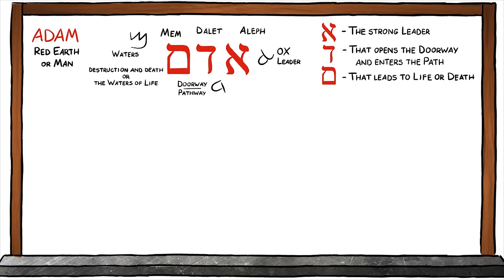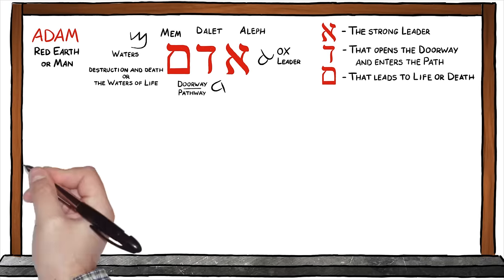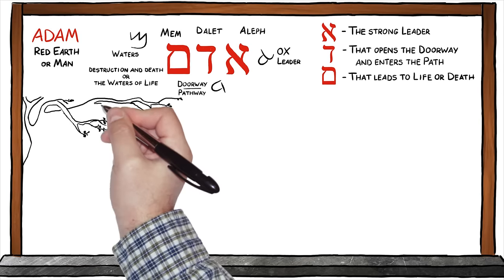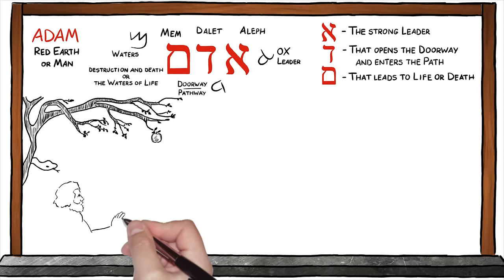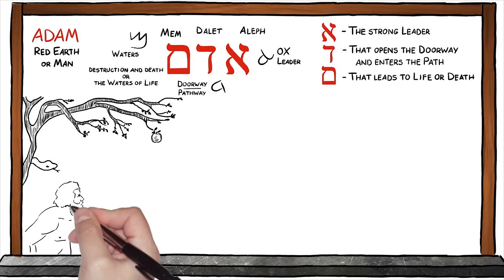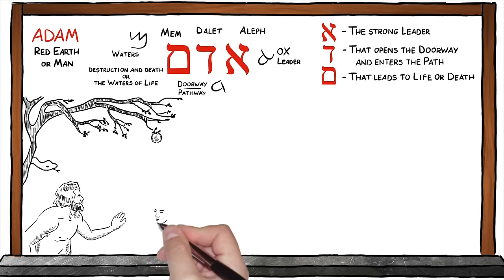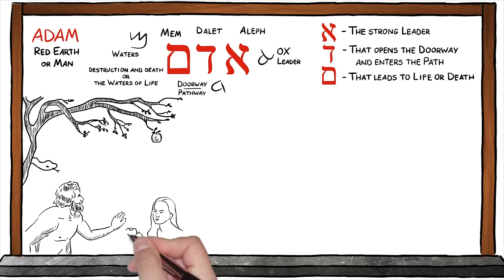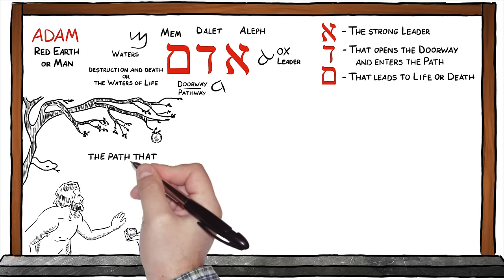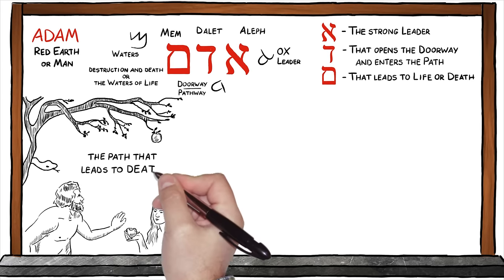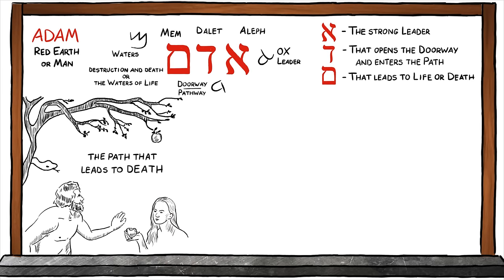Which path did Adam choose? The first Adam rebelled, and with that single act of defiance against God, sin entered into the hearts and souls of mankind. Adam opened the path that leads to death — not only for himself, but for all his descendants.